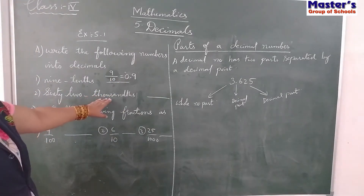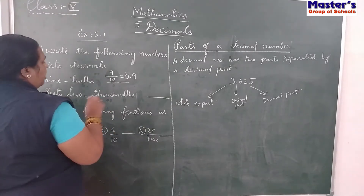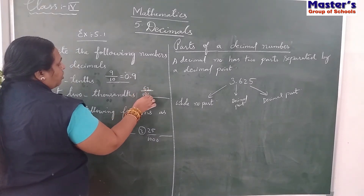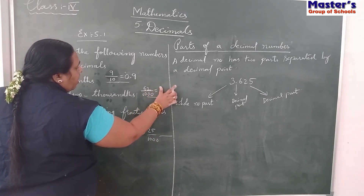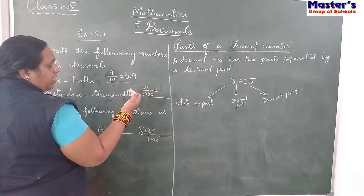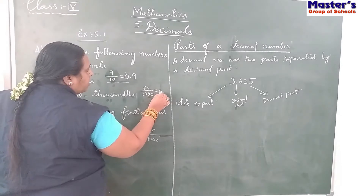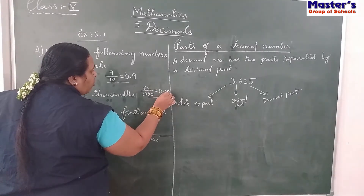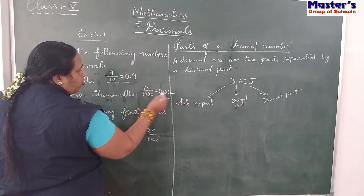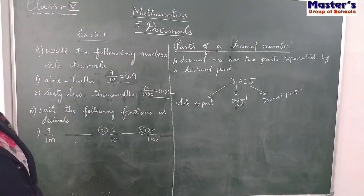Now here, 62/1000th. 62/1000th means 3 zeros. You can write in decimal form as 3 zeros - from left side after 3 zeros, you have to keep the point. But we are not having 3 digits in the numerator, only 2 zeros. So make it as 3 zeros by keeping 1 more extra 0, and from left side 1, 2, 3 - after 3 zeros keep the point. Now this is 62/1000th.